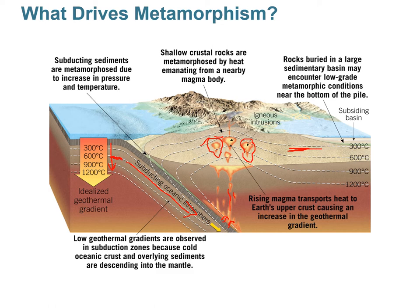The idealized geothermal gradient shows that the deeper you go, the hotter it gets, so rocks at depth begin to exhibit metamorphism as a result of increased temperature. The two colliding plates also increase pressure on rocks in the collision zone, producing metamorphism there as well. Over in the basin where sediments are accumulating, you'll also have low-grade metamorphism.